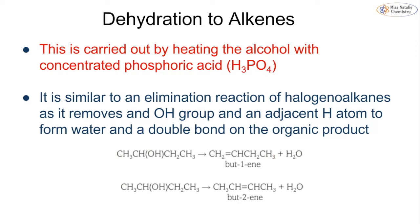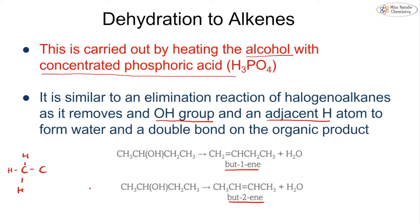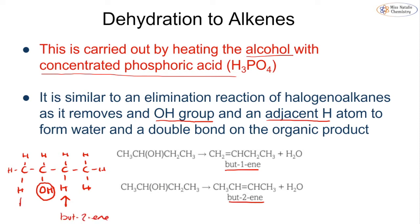Dehydration to alkenes is another reaction we have to know. We do this by heating the alcohol with concentrated phosphoric acid, H3PO4. This is similar to an elimination reaction we've seen in the halogenoalkanes because it removes the OH plus an adjacent hydrogen atom to form a double bond. We can have two possible products — for example butan-2-ol can form but-2-ene or but-1-ene depending on which side the hydrogen is removed from. Just be aware that you can have major and minor products but you're not required to go into a lot of detail about these.